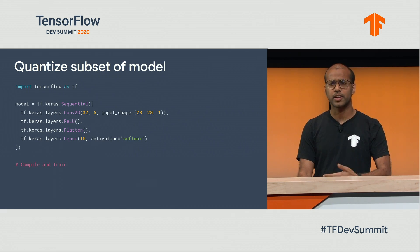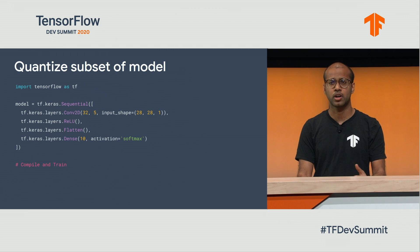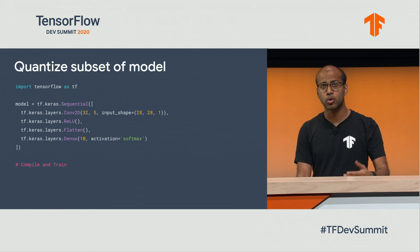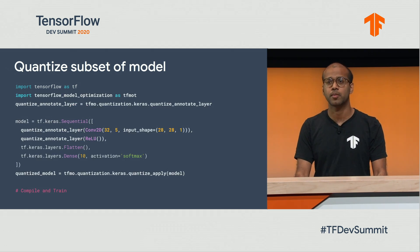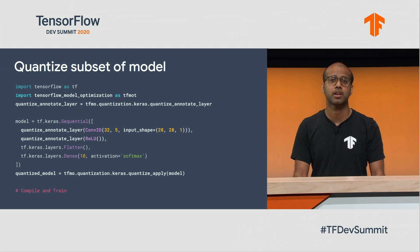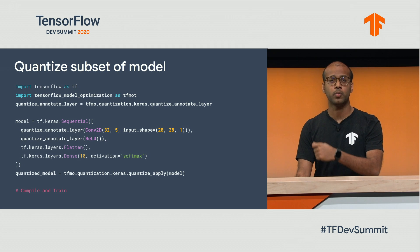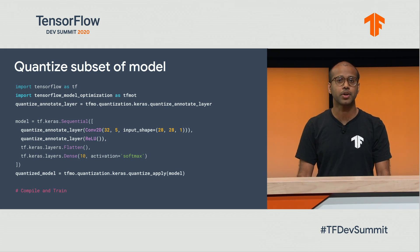You might not want to quantize the entire model. Maybe you want to quantize a subset because some parts are most sensitive to quantization losses or you want the most performance from them. In that case it's still pretty simple — slightly different. You use a quantize annotate layer, tell it which layers you want to quantize, apply it at the end, and you're good to go.